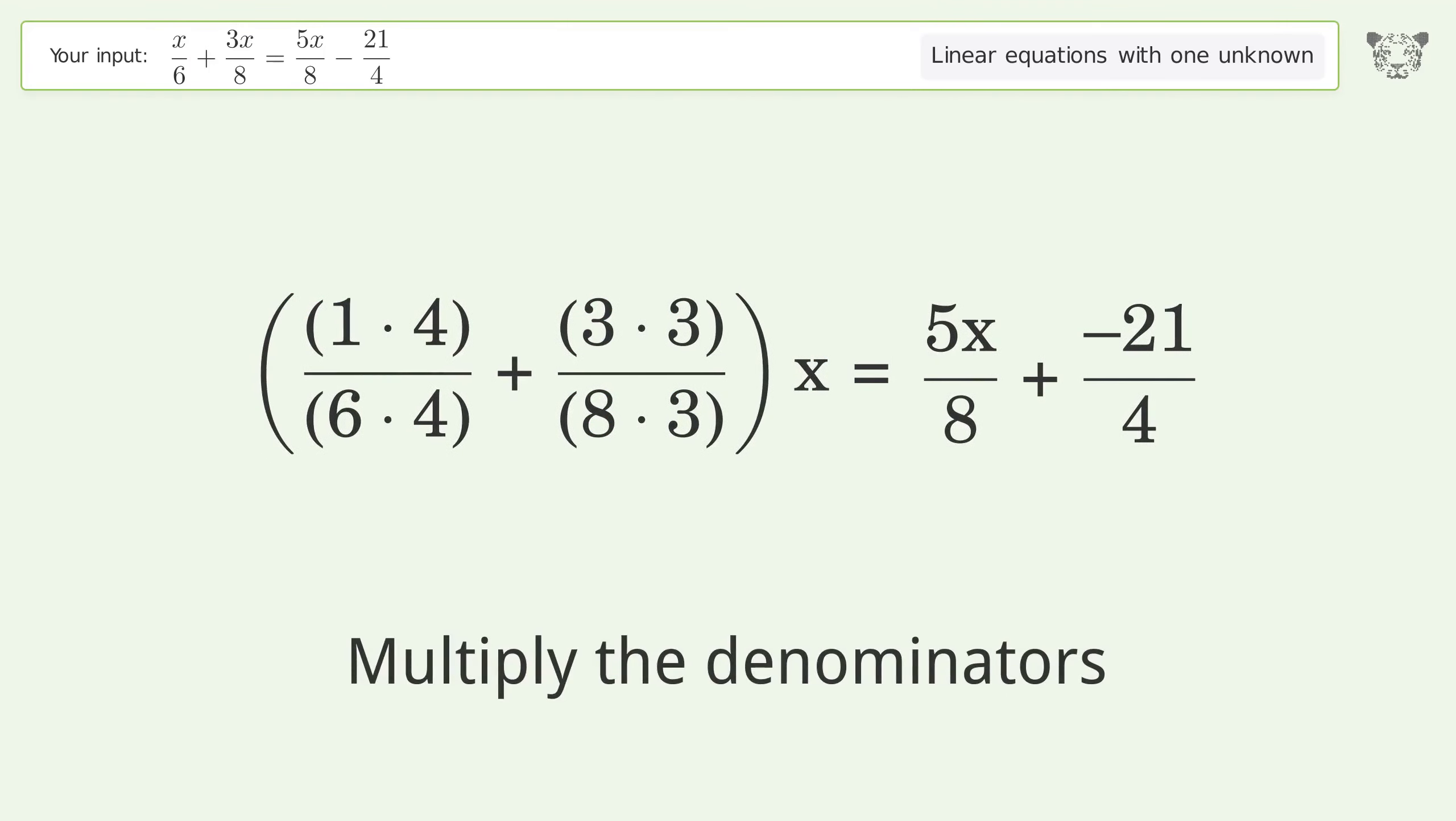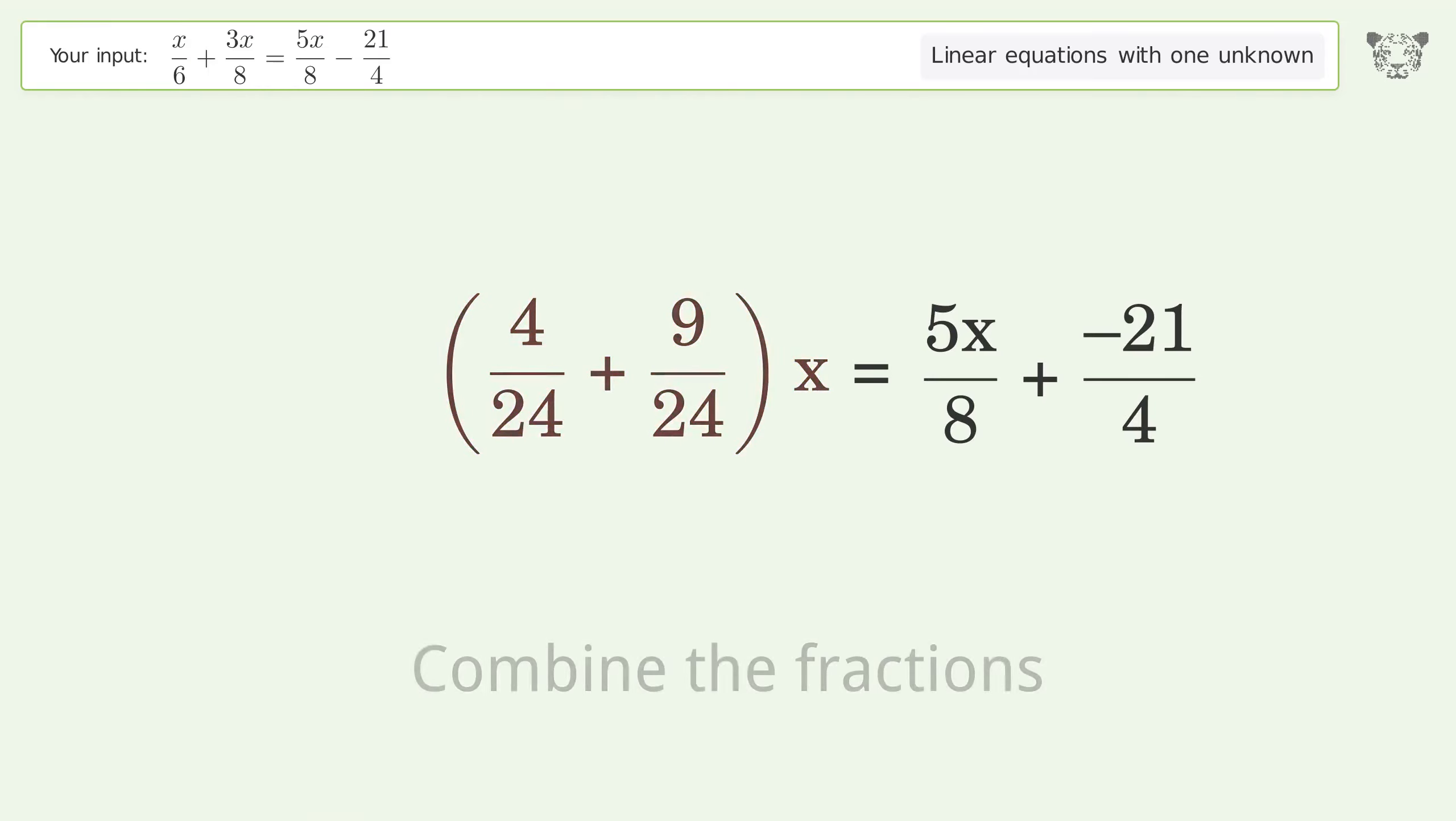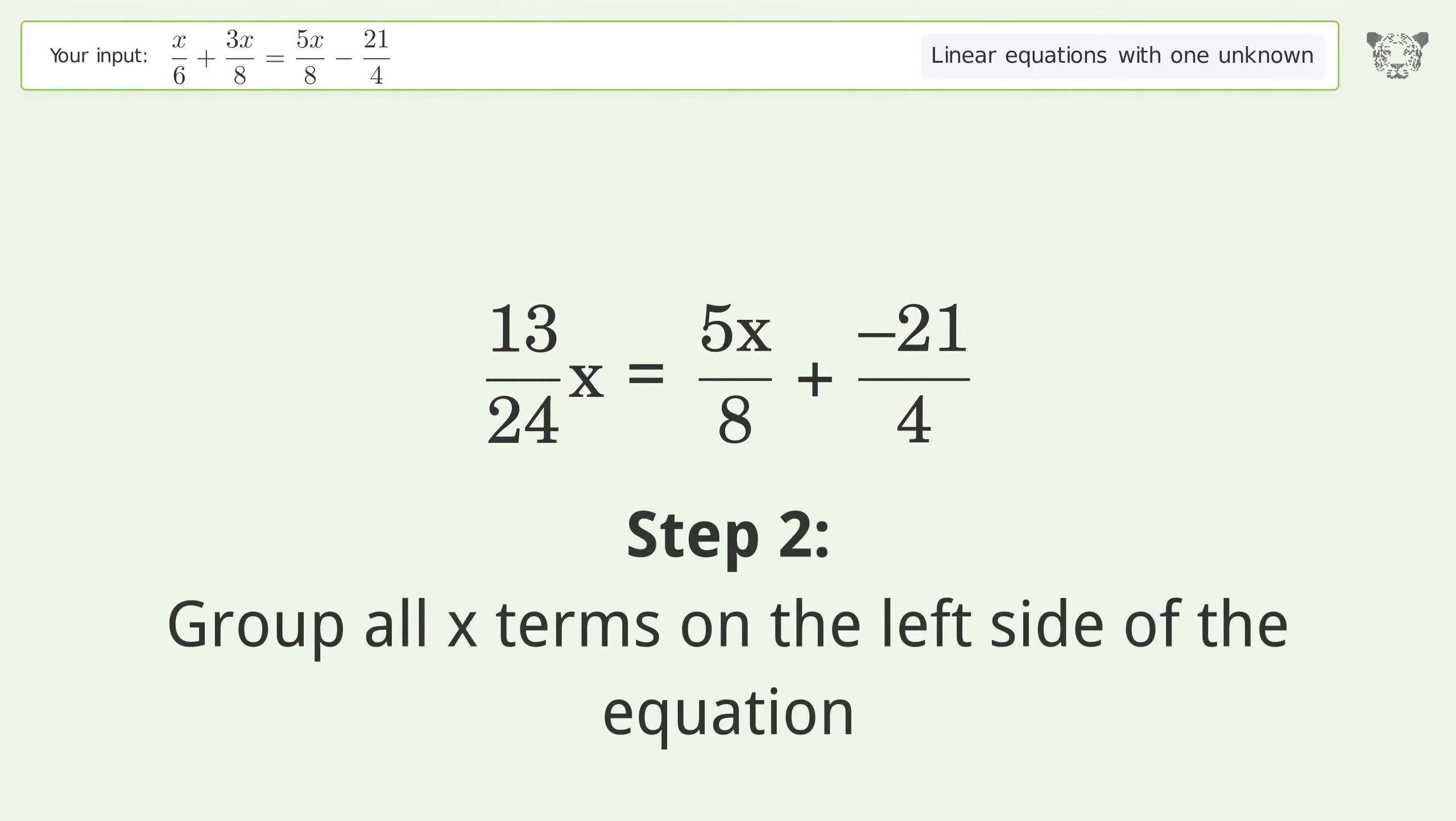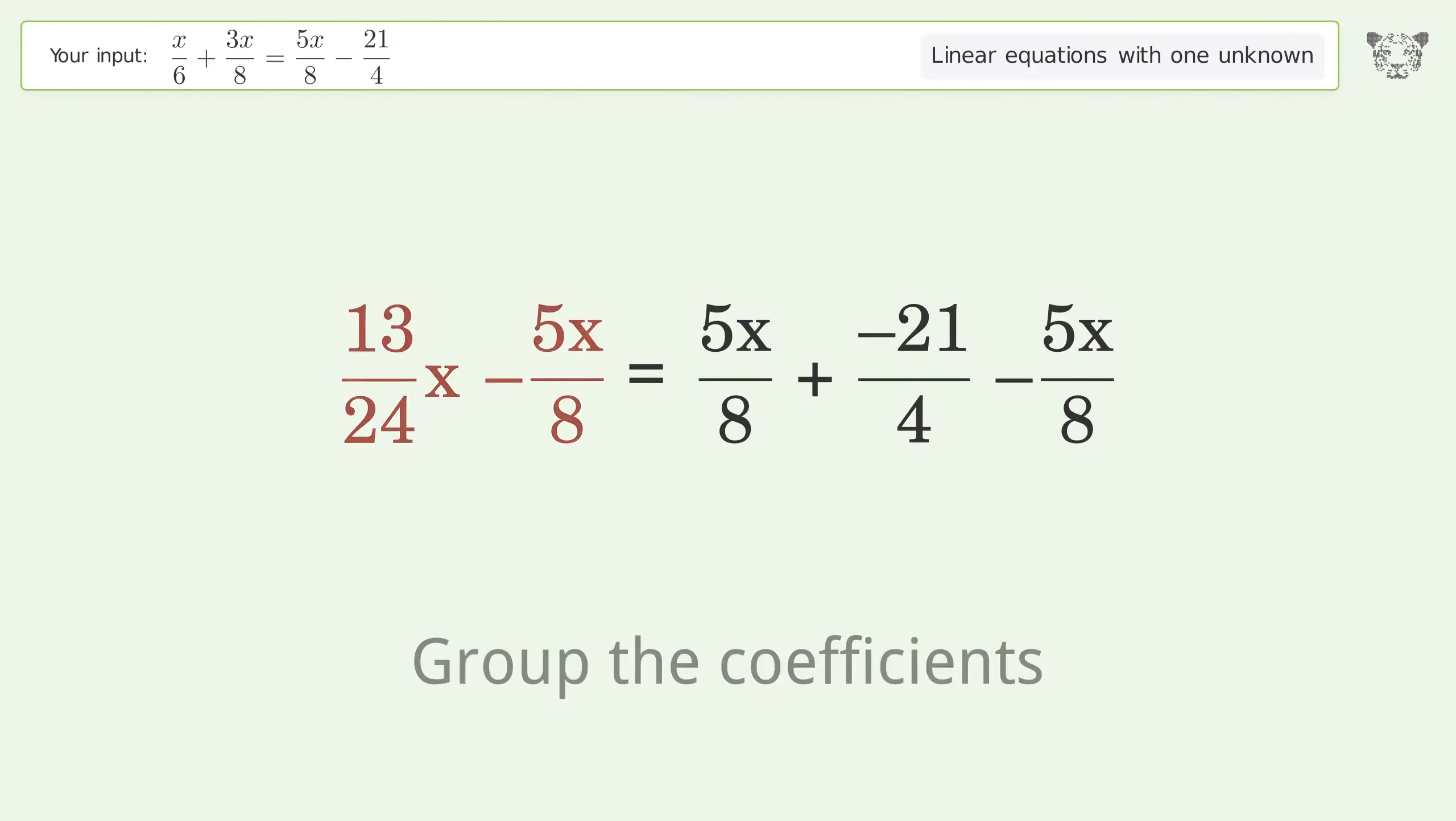Multiply the denominators, multiply the numerators, then combine the fractions and combine the numerators. Group all x terms on the left side of the equation by subtracting 5x over 8 from both sides, then group the coefficients.